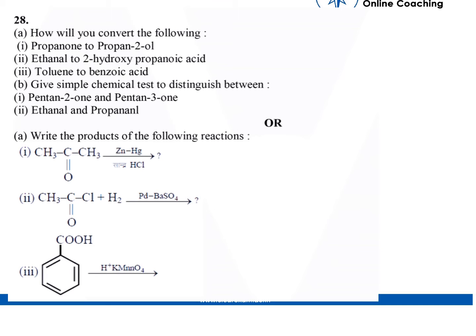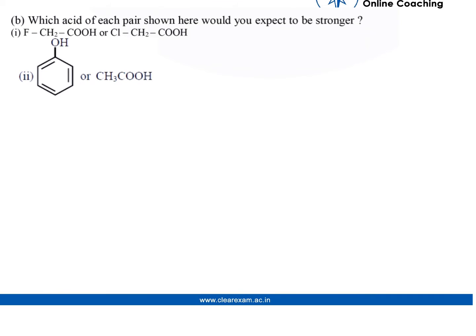Part (b): Give simple chemical tests to distinguish between pentan-2-one and pentan-3-one, and ethanal and propanal. Or, write the products of the following reactions. Part (b): What acid of each pair shown would you expect to be stronger?